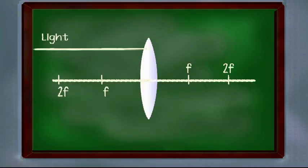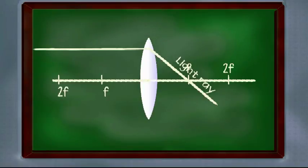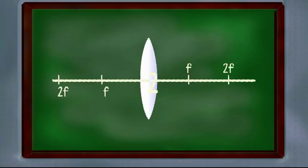One, the light ray parallel to principal axis which is coming from infinite distance will always converge to focal length or focus point.